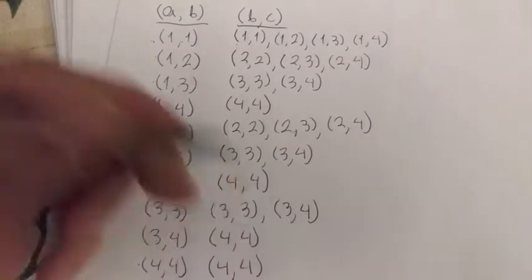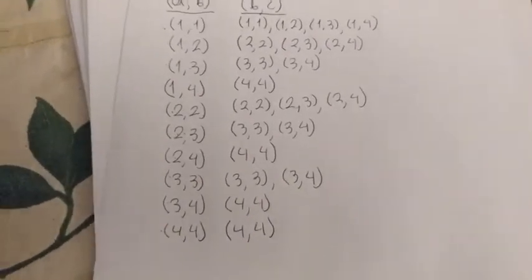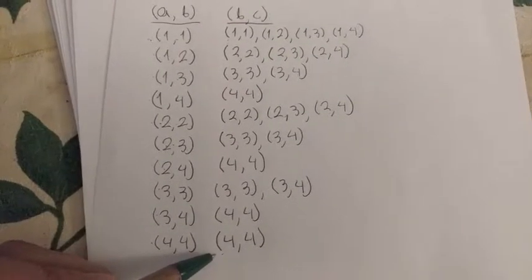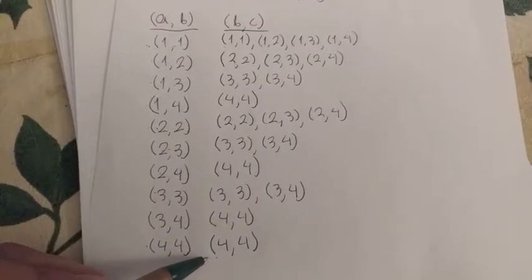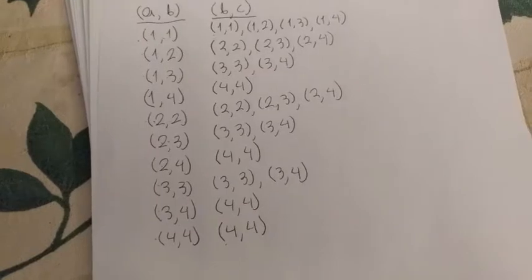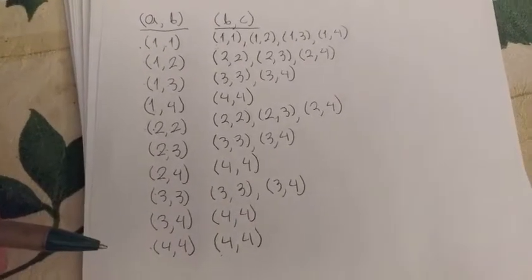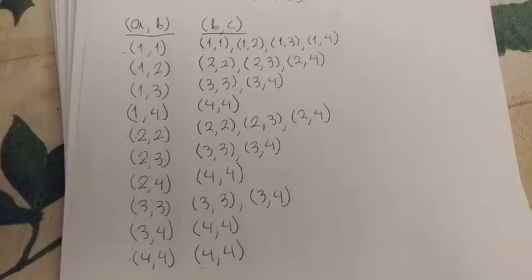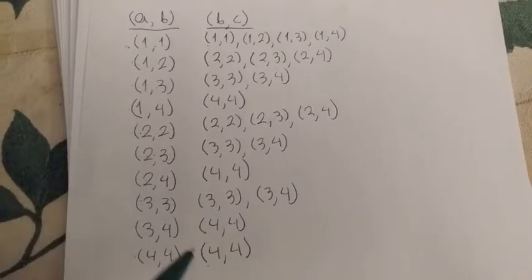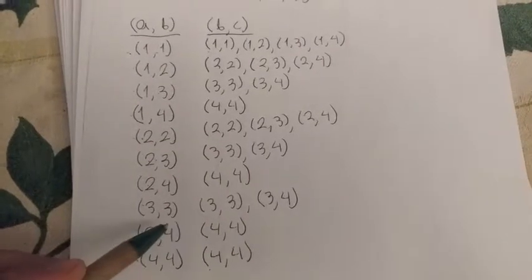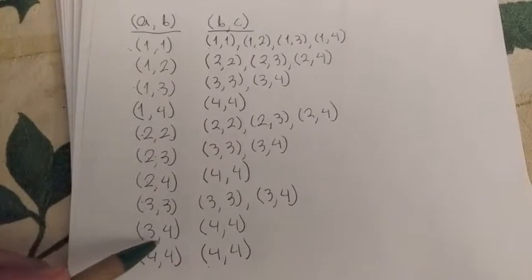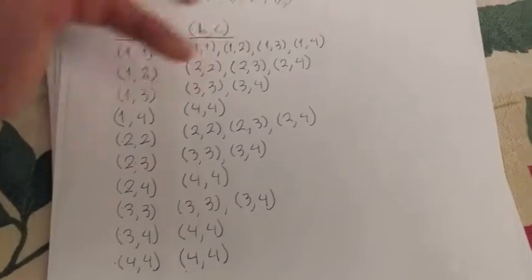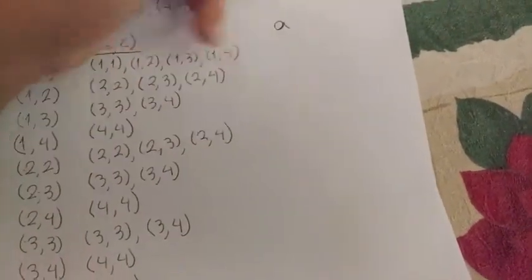And once again, even though it's redundant, we have four, four. So just take a quick second. Hopefully you can replay the video and see you have everything, you have the same exact thing that I do, or in the very least you understand where I got all of these pairs. So double check. Everything seems to be good. Okay, so now I think we can move on to our final AC column.